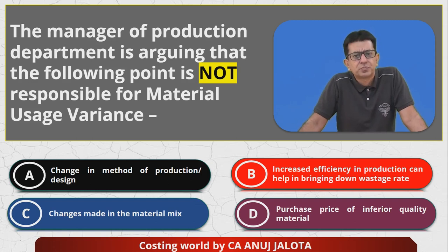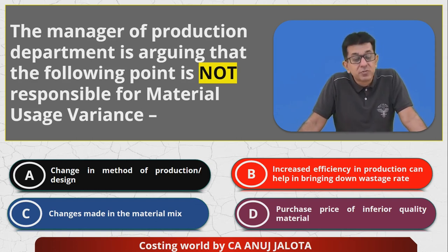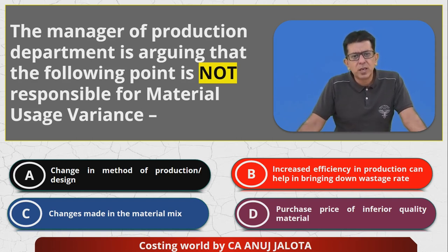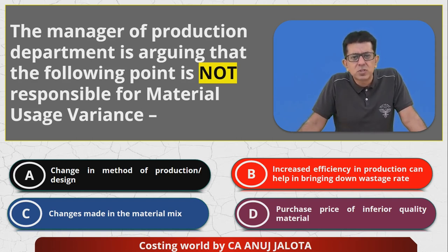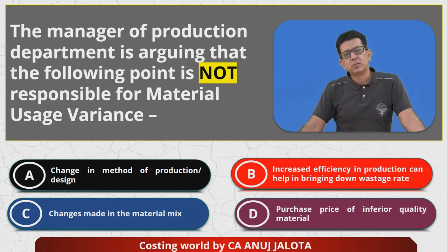For option B — increased efficiency in production can help bring down wastage. If workers' efficiency increases over time because they have learned better methods or been trained, they will consume lesser quantity of material. That can definitely happen, so B also cannot be the reason for 'not responsible for usage variance.'